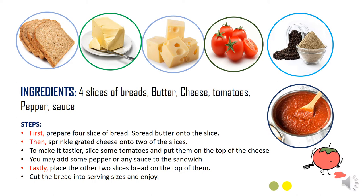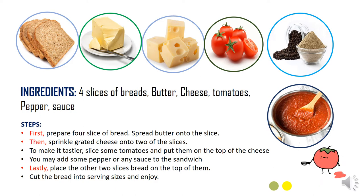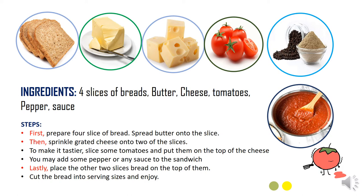Itu tentang ingredients atau bahan-bahannya. Kemudian next kita akan ke steps — langkah-langkah. First: prepare four slices of bread. Spread butter onto each slice — olesi setiap potong roti dengan mentega. Then, sprinkle grated cheese — taburkan keju yang sudah diparut — onto two of the slices. Jadi ditangkupkan, di dalamnya ada taburan atau parutan dari keju. To make it tastier, slice some tomatoes and put them on top of the cheese.